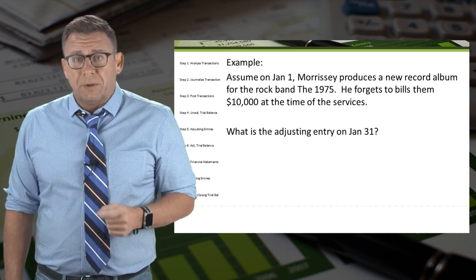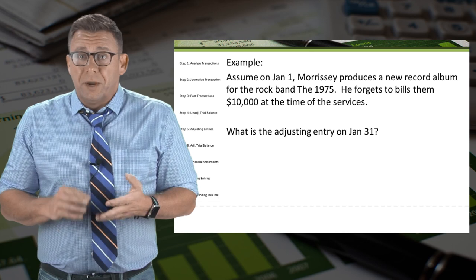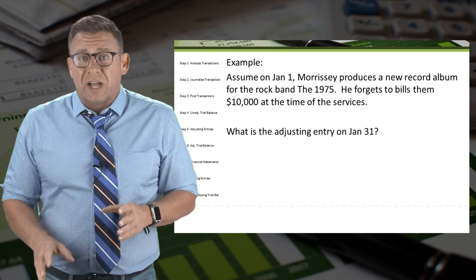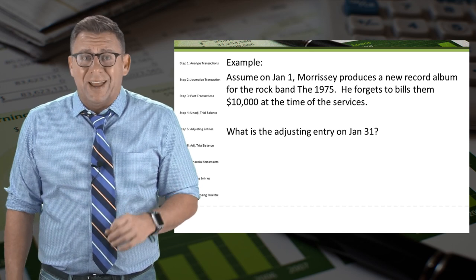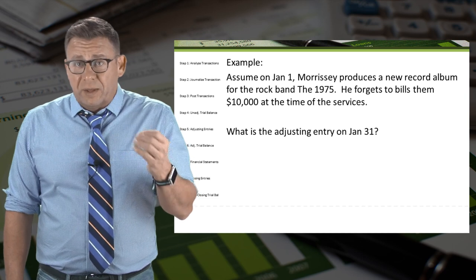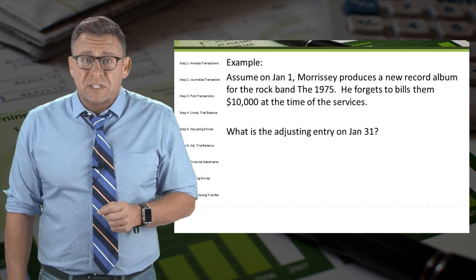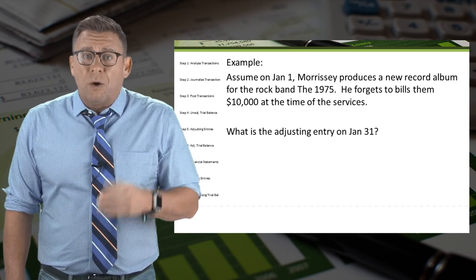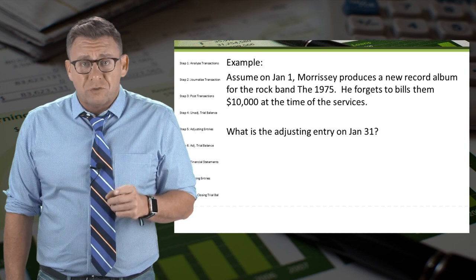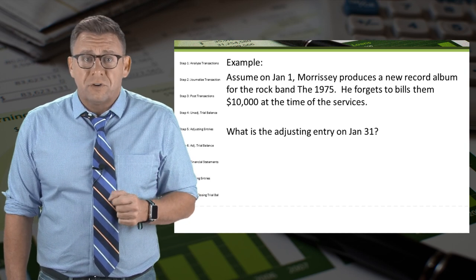Let's look at this example. Assume on January 1, Morrissey produces a new record album from the rock band The 1975. He forgets to bill them $10,000 at the time of service. How would he make an adjusting entry to record this revenue as of January 31st?